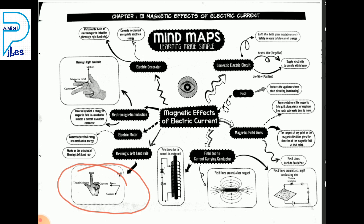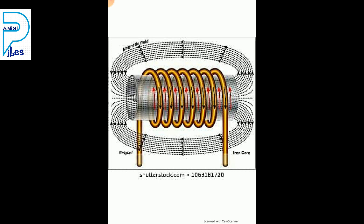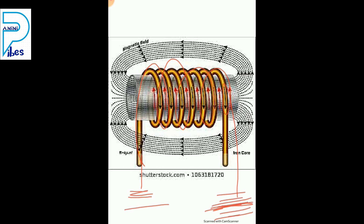Moving to the next page, we covered solenoid. A solenoid is connected to two terminals — positive and negative. When we connect the solenoid to the positive and negative terminals, magnetic field lines form around the solenoid. At the middle of the solenoid, we observe straight lines.